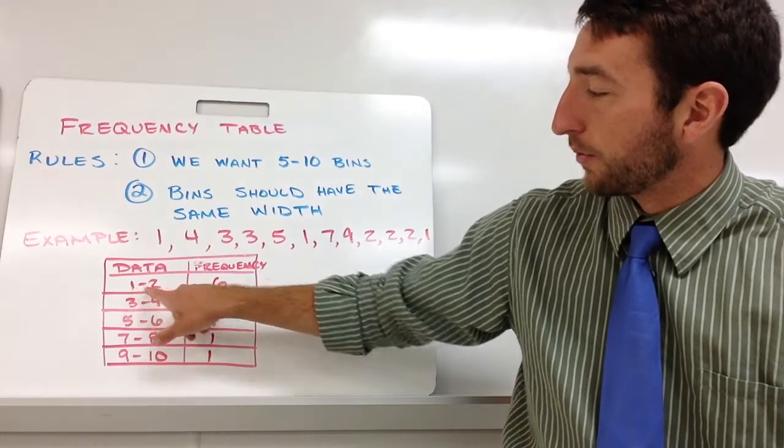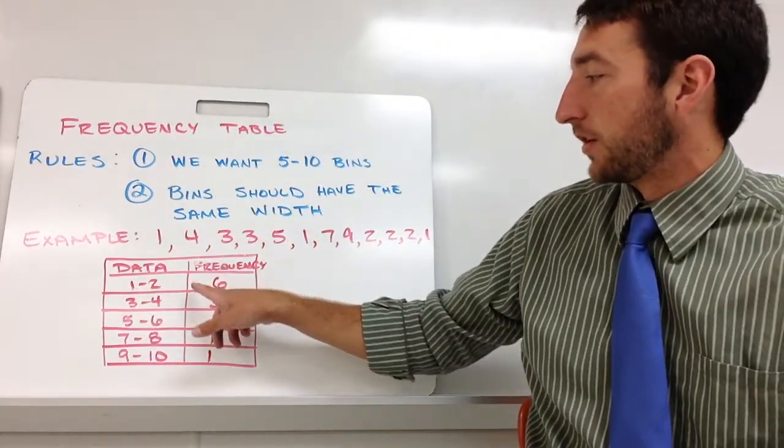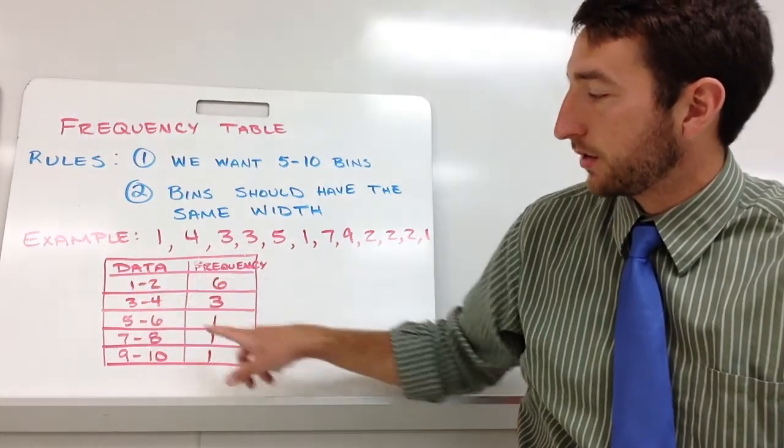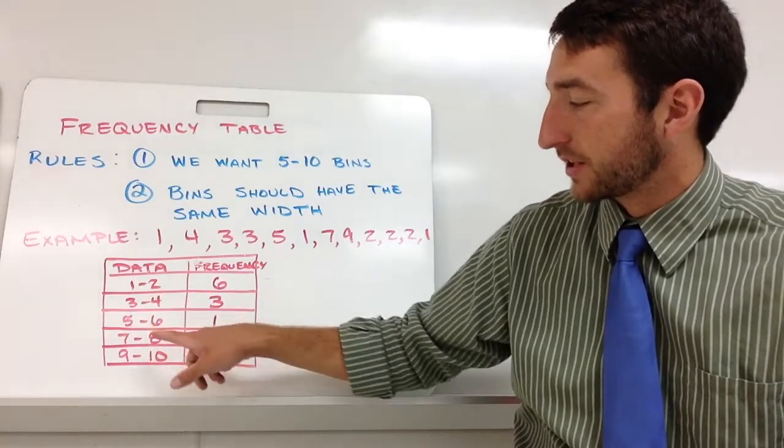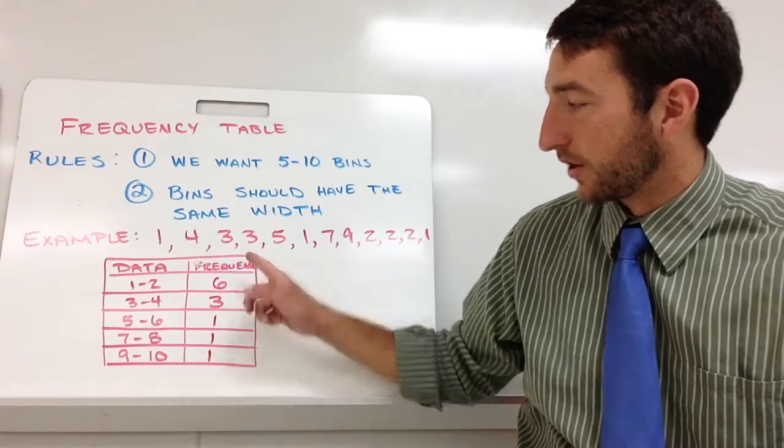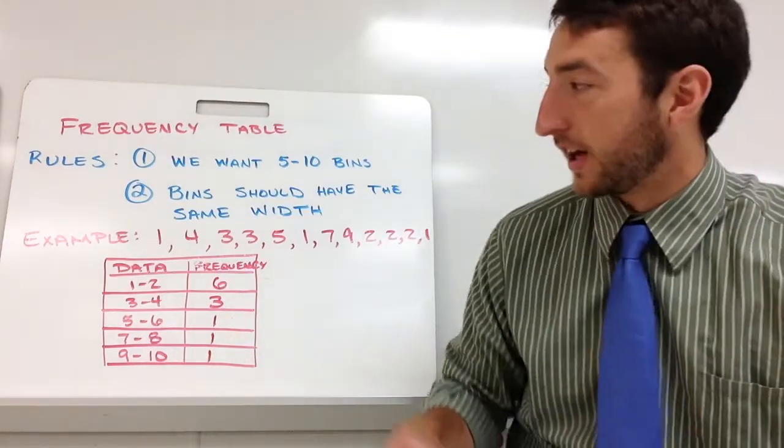So my data from one to two, same data as my dot plot. So I got six numbers that are between one and two. I got three numbers that are between three and four, one number between five and six, one number between seven and eight, one number between nine and ten. So that frequency just counts the number of times our data falls within that range of numbers.